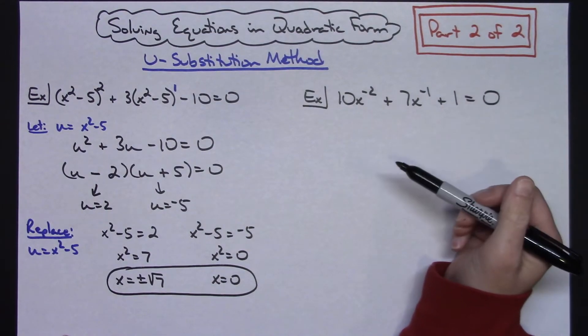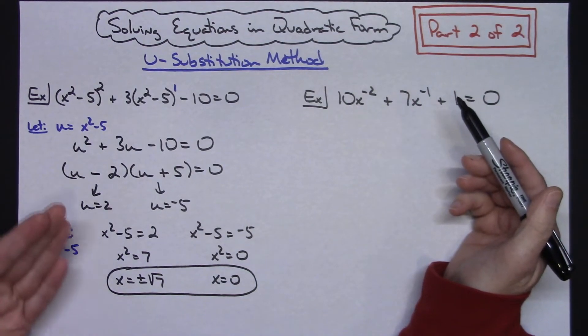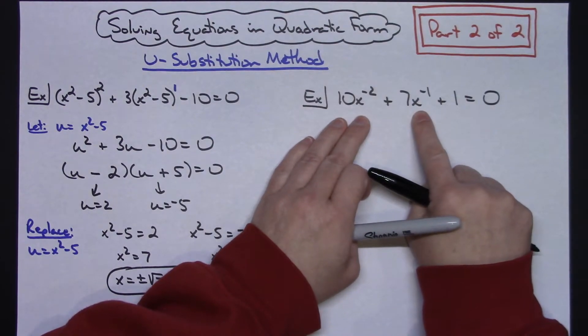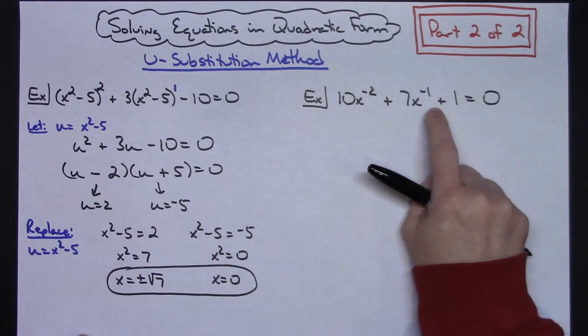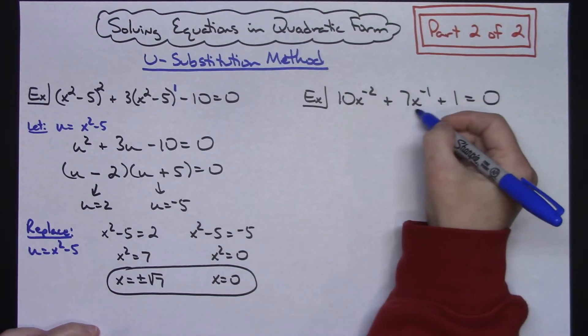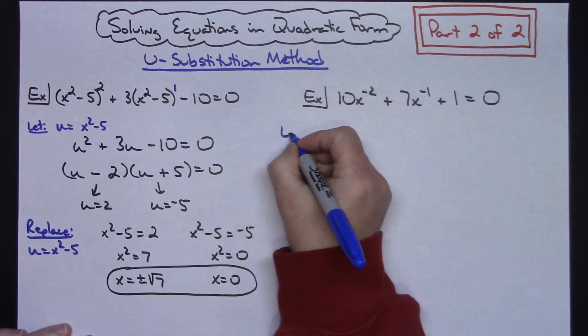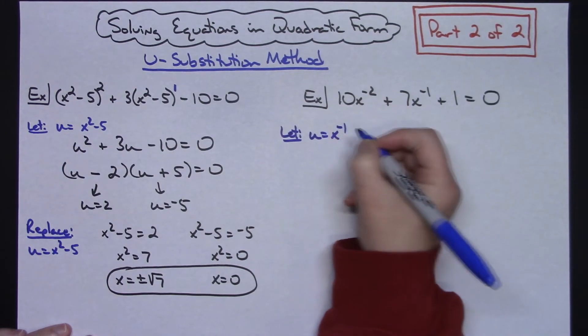You sometimes see negative exponents like that. Again, the same method is going to work if it's in this quadratic form, so I'm going to check both those first and second terms. Negative 1 is half of negative 2, so it is in this quadratic form where the u substitution method is going to work. I'm going to let my u be that middle exponent term. So we're going to let u equals x to the negative 1.